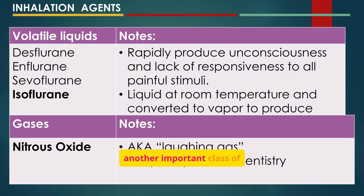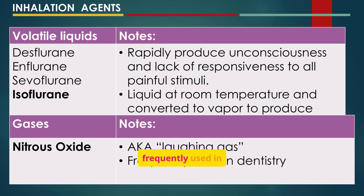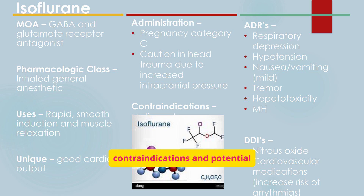Inhalation agents are another important class of anesthetics. Volatile liquids like desflurane and sevoflurane rapidly induce unconsciousness, and nitrous oxide — also known as laughing gas — is frequently used in dentistry. Isoflurane provides rapid, smooth induction and muscle relaxation, but its contraindications and potential adverse effects such as respiratory depression and hypotension must be considered.